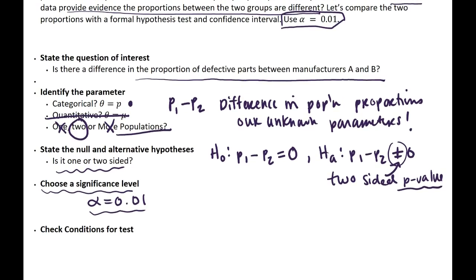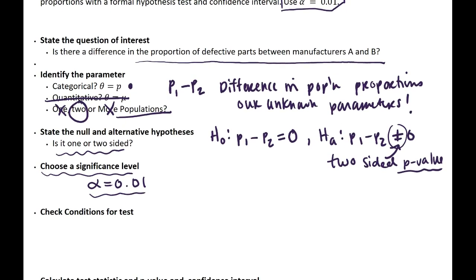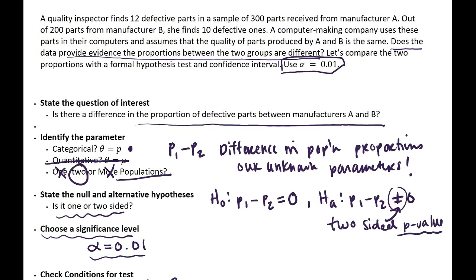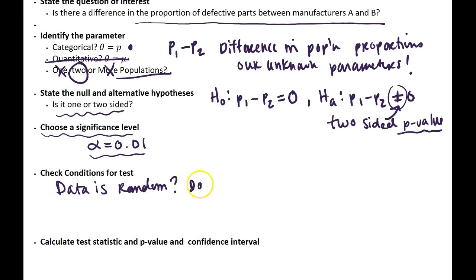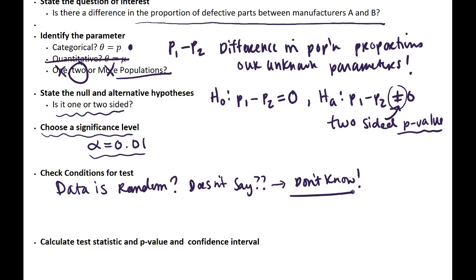Next, we should check the conditions for a two-proportions Z test. First, we need to know that the data is random — are our samples random? Looking at the example, it says a quality inspector finds defective parts in a sample of 300 parts from the manufacturer, but it doesn't actually say whether or not they're random. So we don't know whether this condition is met, and we'll leave that condition as not quite met.